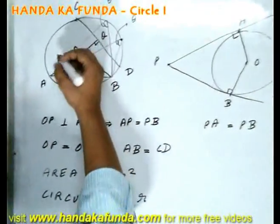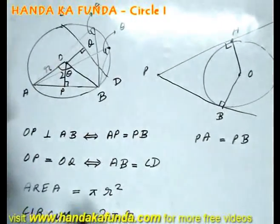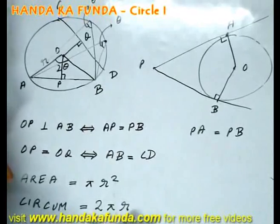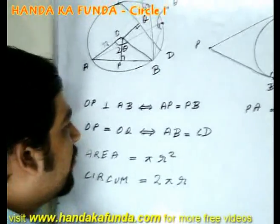I am given a circle which has the radius of R units. Its area will be pi R square and its circumference is 2 pi R, but that's something you already knew.